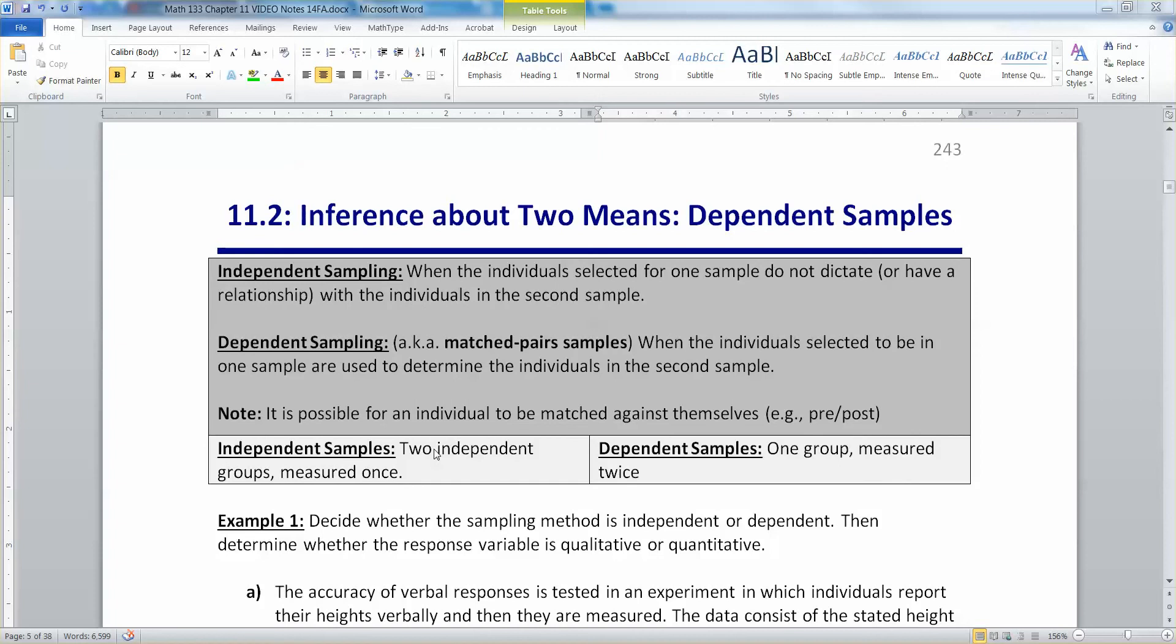Independent sampling is when the individuals selected for one sample do not dictate or have a relationship with the individuals in the second sample. Dependent sampling, also known as often matched pairs samples, is when the individuals selected to be in one sample are used to determine the individuals in the second sample.